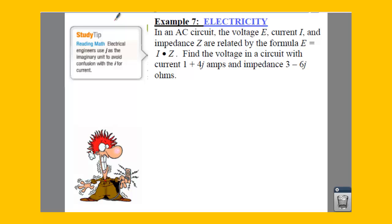but a different type. Whenever we have an AC current, you have your voltage E, current I, and impedance Z. They're related by the equation E equals I times Z.